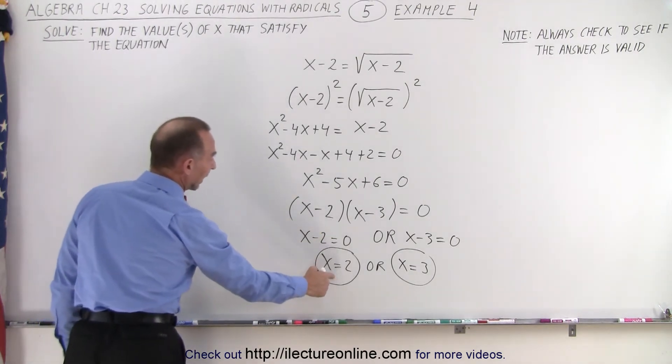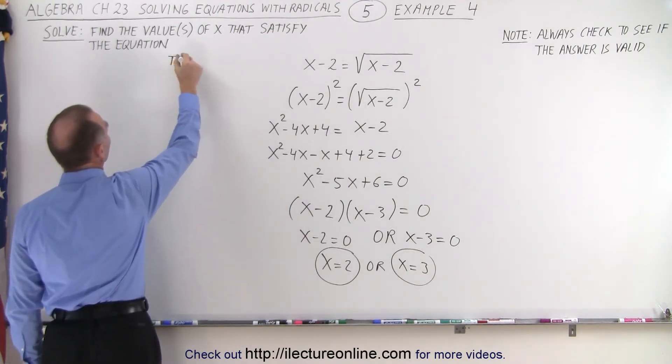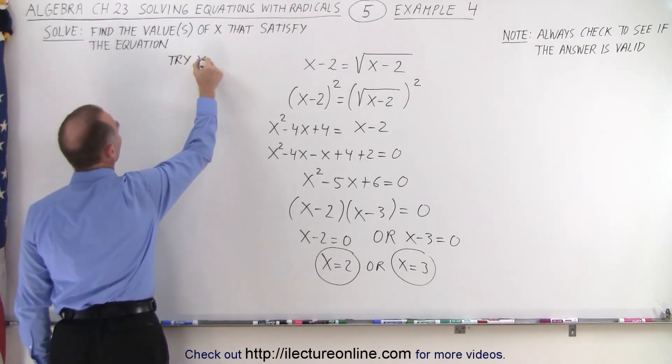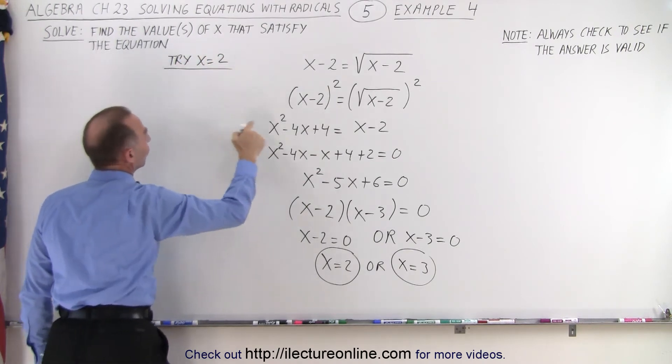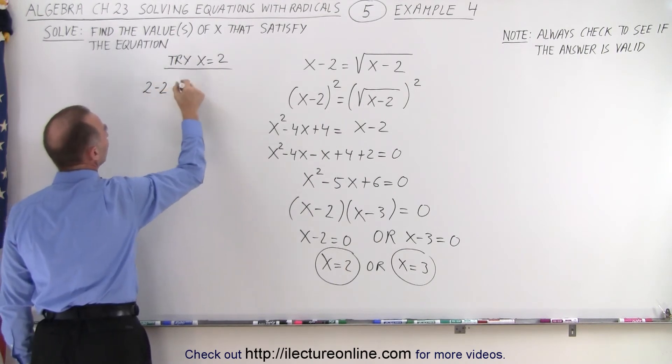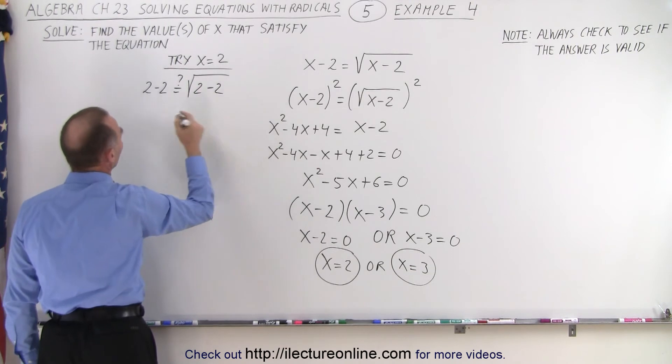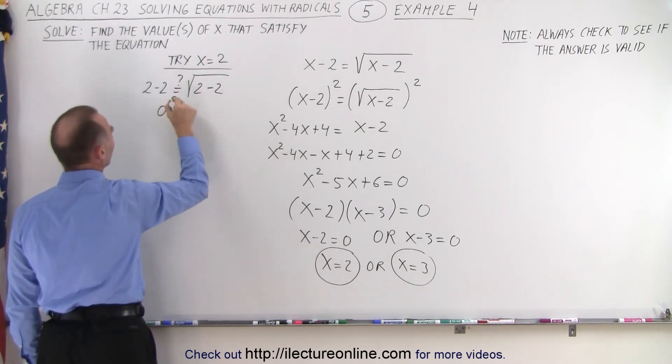All right, so let's plug in x equals 2. So that means try x equals 2. And so we're going to replace every x by 2 and see what we get. 2 minus 2 is that equal to the square root of 2 minus 2.